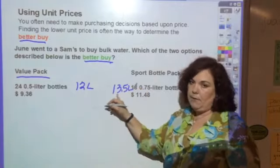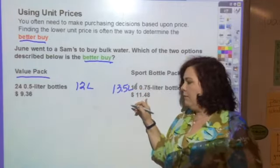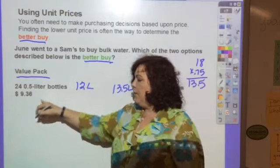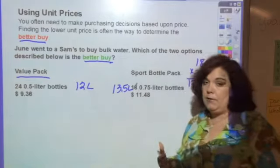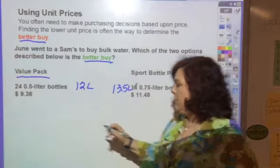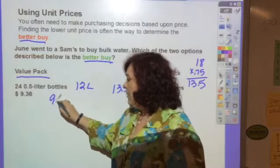So now the question is: this is a bigger amount and this is a bigger amount of money. This is a smaller amount, this is a smaller amount of money—but which is the better buy? You're going to do this by finding the unit price.